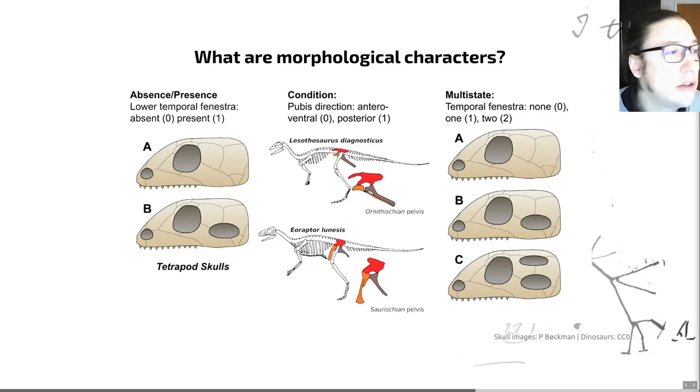So a classical example, such as that one shown on the left here, of a morphological character is the absence or the presence of a feature. So in this example, we've got the lower temporal fenestra. This is a hole in the skull behind the eye that is found in some but not all tetrapods. And we can mark it as presence or absence. And the presence or absence of this feature in all of the skulls of species that we're interested in can be coded. And that becomes our morphological character.